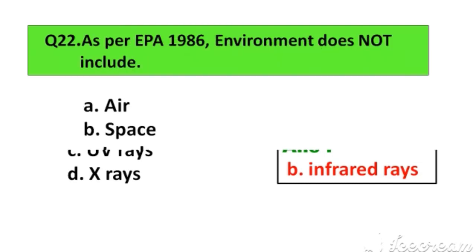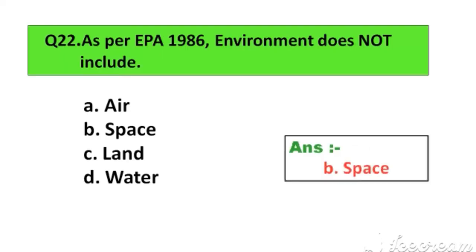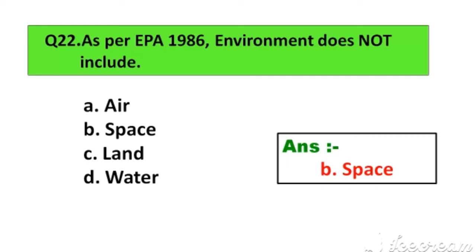Question number 22. As per EPA 1986, environment does not include: Option A. Air, B. Space, C. Land, D. Water. The right answer is Option B. Space.